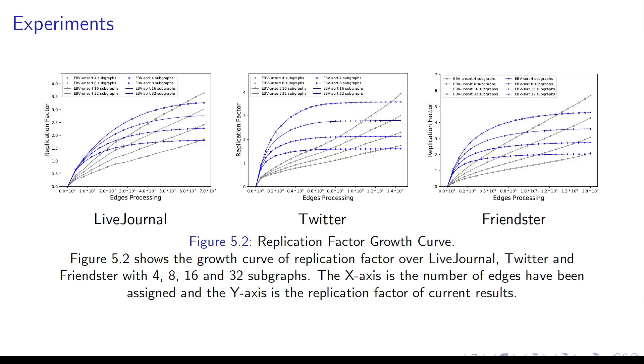We also made the ablation study for the influence of the sorting preprocessing. The blue lines indicate the partition progress with the sorting preprocessing. The replication factor of them looks like curves, and the EBV without sorting looks like linear growth. Finally, we can find that the sorting will reduce the replication factor.